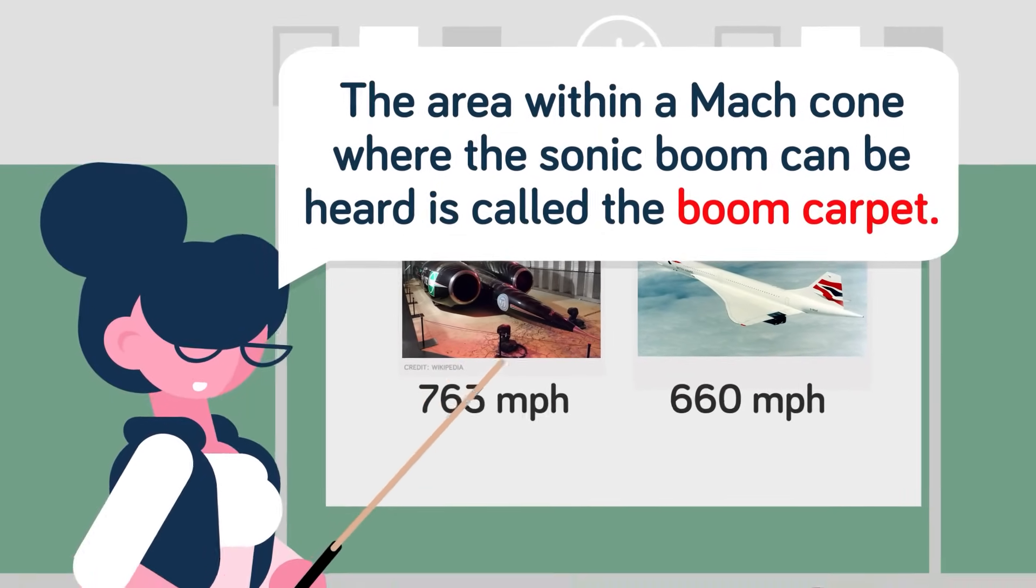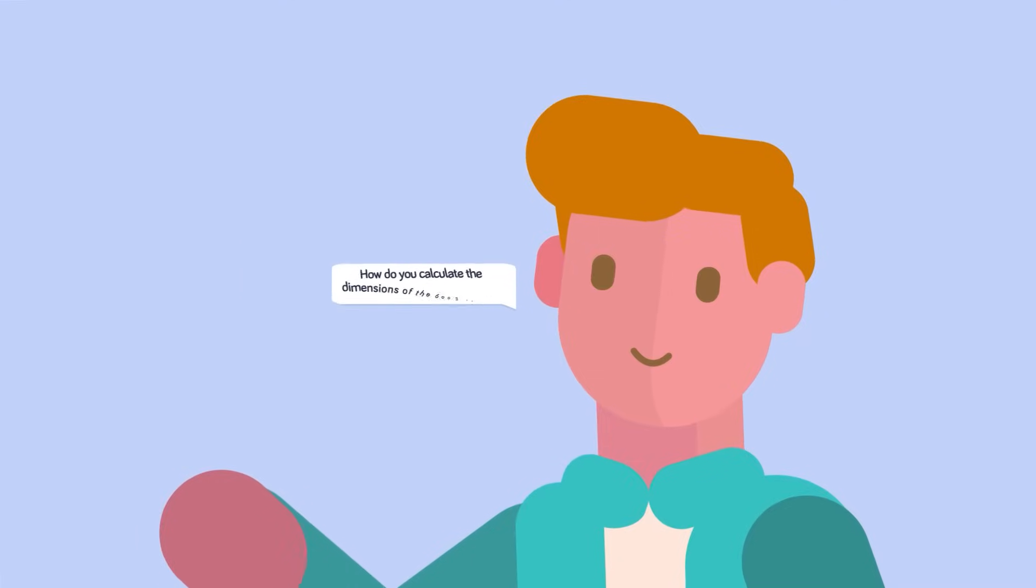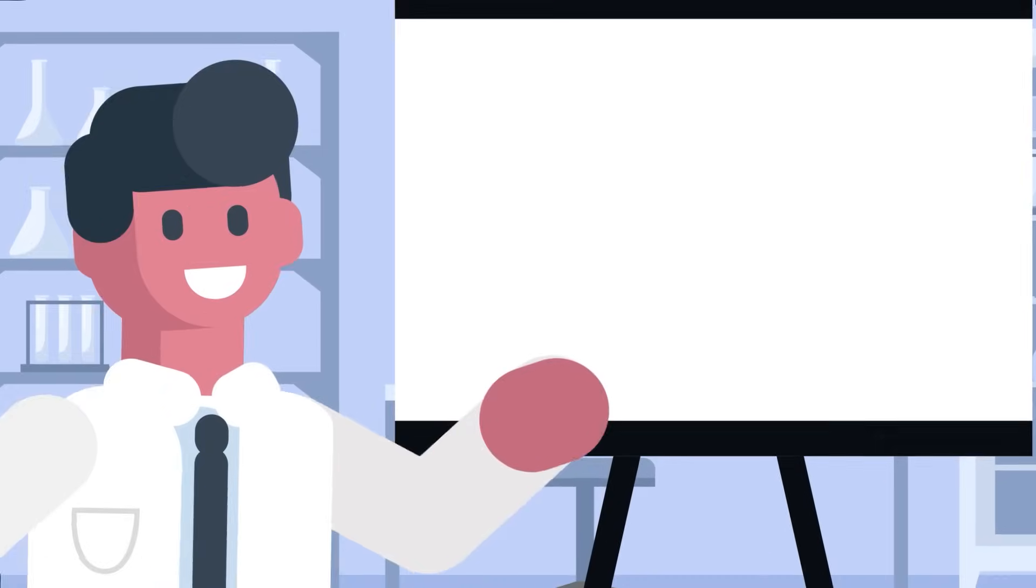The area within the Mach cone where the sonic boom can be heard is called the boom carpet. Researchers can calculate the exact dimensions of the boom carpet to know how much area will be affected by the sonic boom of an aircraft flying overhead.